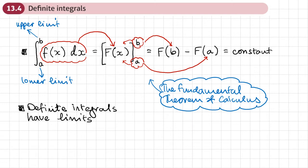So definite integrals have limits. Basically the steps are: integrate, then write it in square brackets with these limits, substitute those limits in, then get an answer. It's always subtracting the value from substituting the upper limit minus the value from substituting the lower limit.